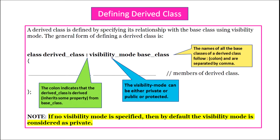Defining a derived class: a derived class is defined by specifying its relationship with the base class using visibility modes. The general syntax is: class keyword, then the derived class name, colon, visibility mode, then the name of the base class. The visibility modes can be private, protected, or public. You can also name more than one base class, separated by commas. If no visibility mode is specified, it defaults to private.